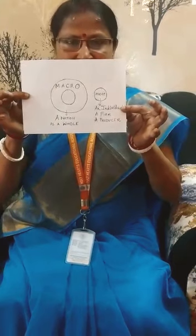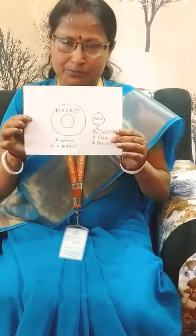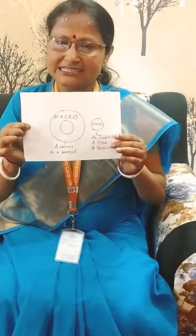Let me show you a diagram first of all. The small circle which you can see is the micro concept and the bigger circle is the macro concept. The small circle indicates that the micro concept studies about an individual, about a producer, about a firm. Whereas the macro concept studies about the nation as a whole. In this way we can understand that while studying macroeconomics, we study the economy as a whole, the general price level in the economy, and the government budget of the economy.